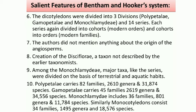Tenth point: Polypetalae carries 82 families, 2,016 genera, and 31,874 species. Gamopetalae carries 45 families, 2,619 genera, and 34,556 species. Monochlamydae includes 36 families, 801 genera, and 11,784 species. Monocotyledons consist of 34 families, 1,495 genera, and 18,576 species.